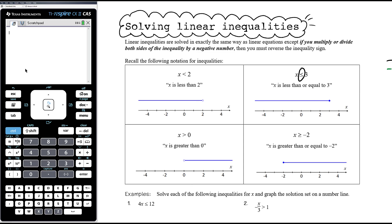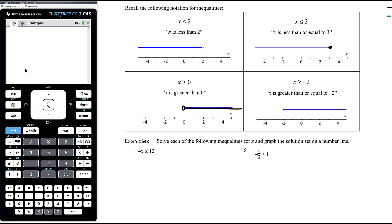Less than or equal to: if x can be less than 2, it can't be 2 — which is why we have a hollow circle on the number line. It can be anything less than 2, including 1.9, 1.99999, 1.5, one and a third — not just integers. x can be any value right up to but not including 2. x less than or equal to 3 means x can actually equal 3, so we use a closed circle at 3. x greater than 0 uses a hollow circle at 0; x greater than or equal to negative 2 uses a closed circle at negative 2.